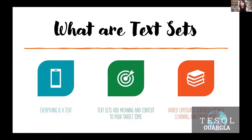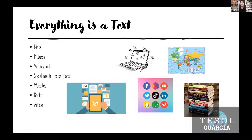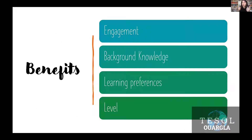When I say a text, you're going to think about a book. But actually, everything is a text. Any form of material that you can get information on that relates to your topic is a text. So a map can be a text, a picture can be a text, a video, a song, social media posts, websites, books, articles — any type of material that's going to add meaning to your text set and to the topic you're teaching qualifies as a text.